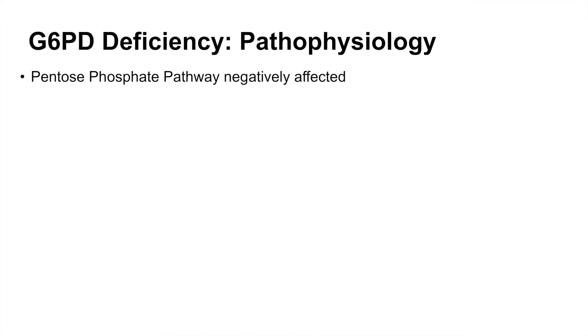Babies that have a deficiency in this enzyme may experience neonatal hyperbilirubinemia or neonatal jaundice. Now, what is the pathophysiology of glucose-6-phosphate dehydrogenase deficiency? Well, because the glucose-6-phosphate dehydrogenase enzyme is critical in the pentose phosphate pathway, the pentose phosphate pathway is negatively affected when this enzyme is deficient.